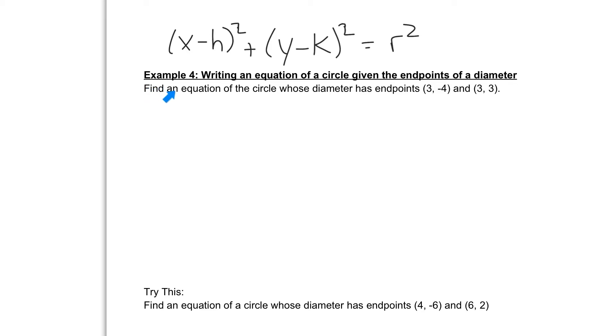In example 4, we want to find an equation of the circle whose diameter has endpoints of 3, -4 and 3, 3.